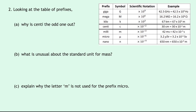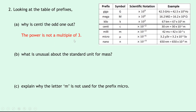Moving on to question two — it says, looking at the table of prefixes, part a is: why is centi the odd one out? If we look here, centi is the odd one out because it's a power of two, not a power of three. All the others are multiples of three, but centi is only a power of two, so the power is not a multiple of three.